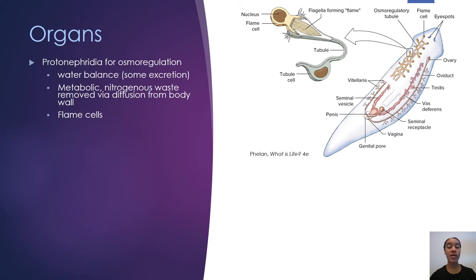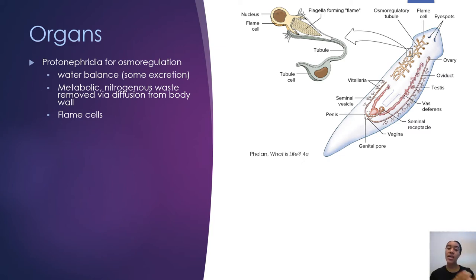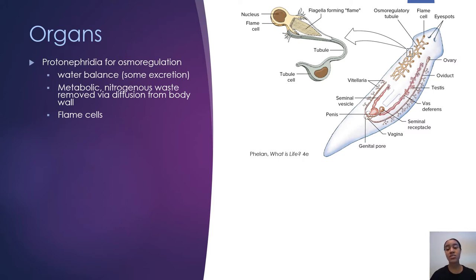Flatworms are the first organisms we're talking about this semester that exhibit organs and organ systems. Cnidarians were much simpler — no cephalization, only two germ layers, diploblastic, no designated organs, just a nerve net and musculoepithelial cells. Now in flatworms we're starting to see cephalization, triploblasty, and the development of actual organs and organ systems. We're not going to go super in-depth about all these systems, but it's important to know we're seeing more complex systems as we move into flatworms, and it'll get more complex as the semester continues.